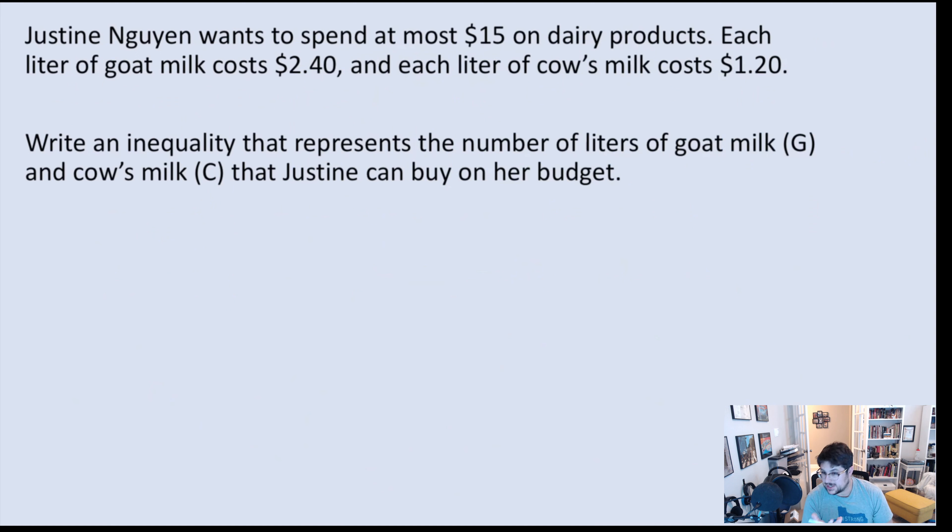This is starting to get into inequalities. Justine wants to spend at most $15 on dairy products. Each liter of goat milk costs $2.40. Each liter of cow milk costs $1.20. And we're saying liters of goat milk is G. Liters of cow milk is C. Let's start with this. If she wants to spend at most $15, she wants to be less than or equal to $15. And how much does goat milk cost? Goat milk costs $2.40 times G plus cow milk costs $1.20 times C. This is just a value part of this.